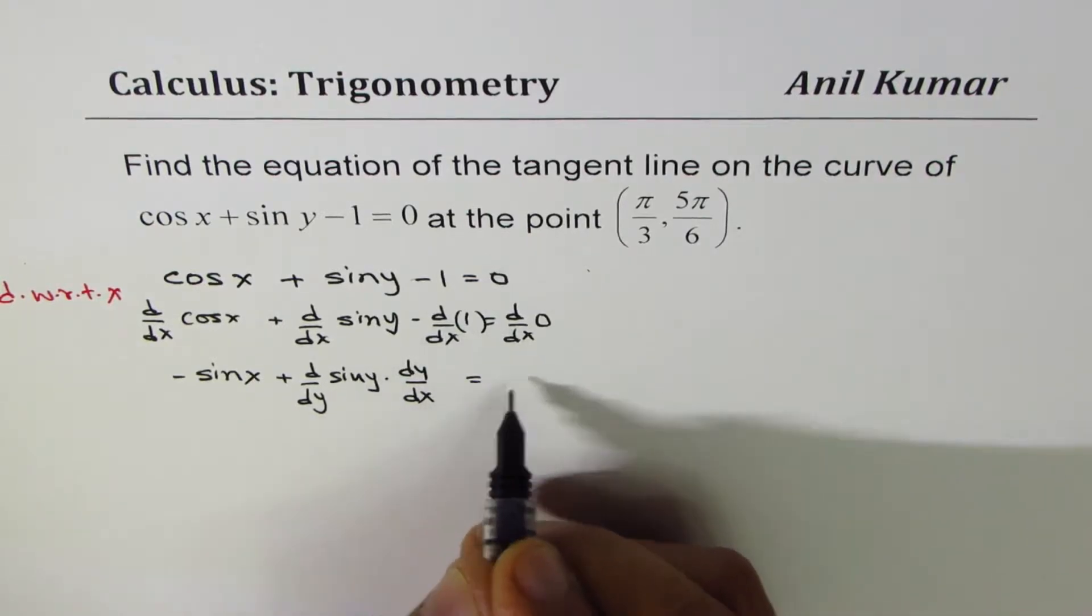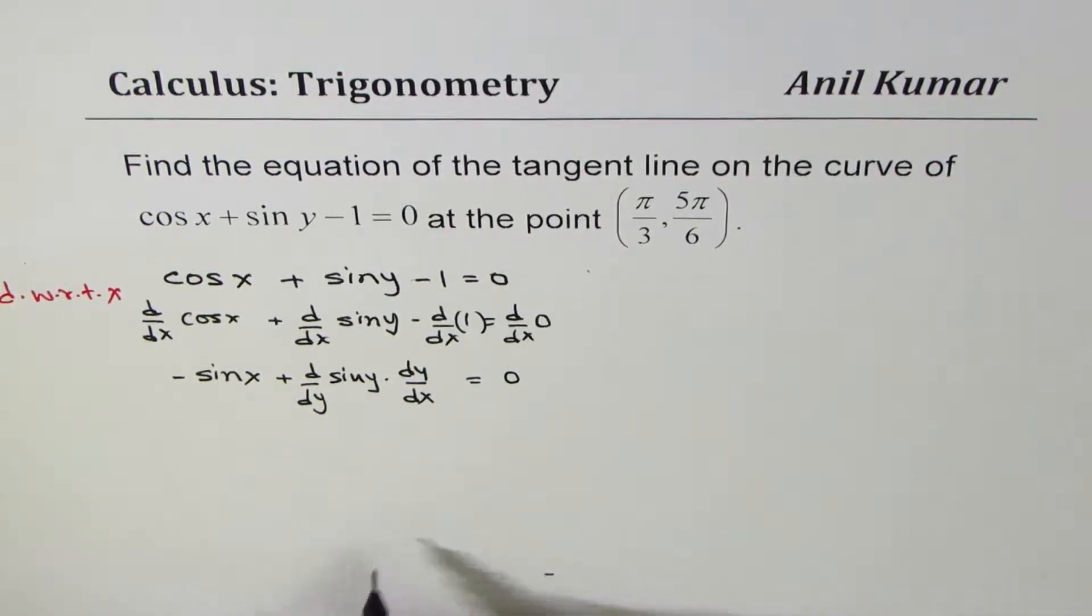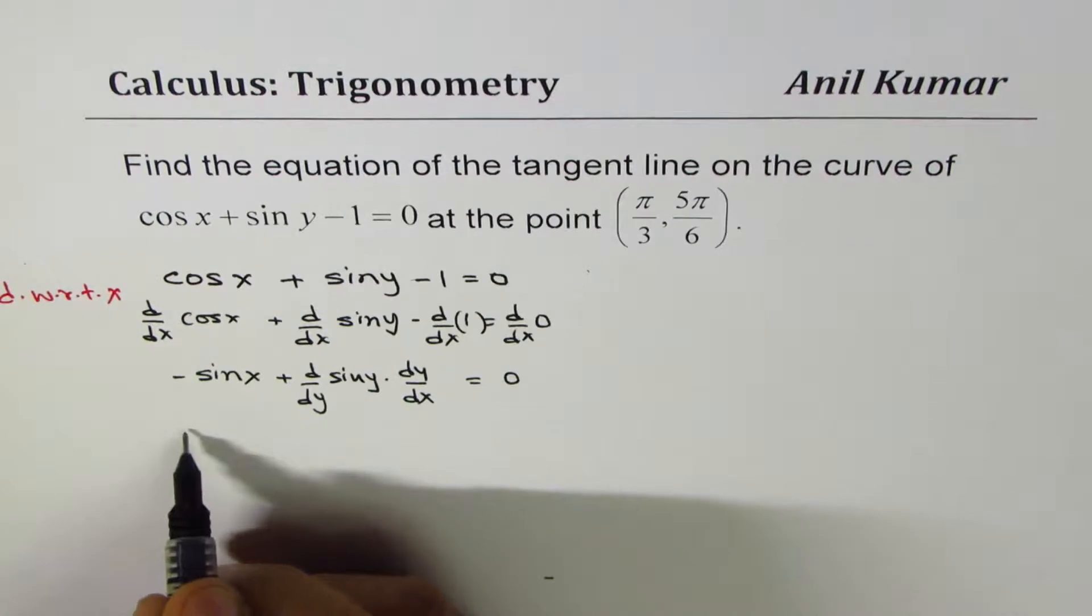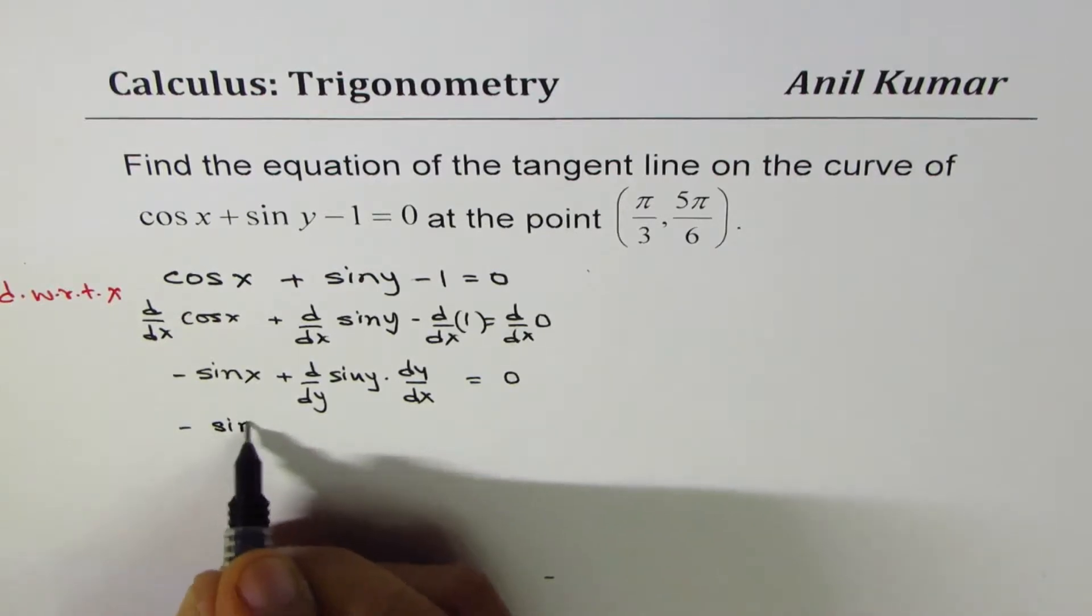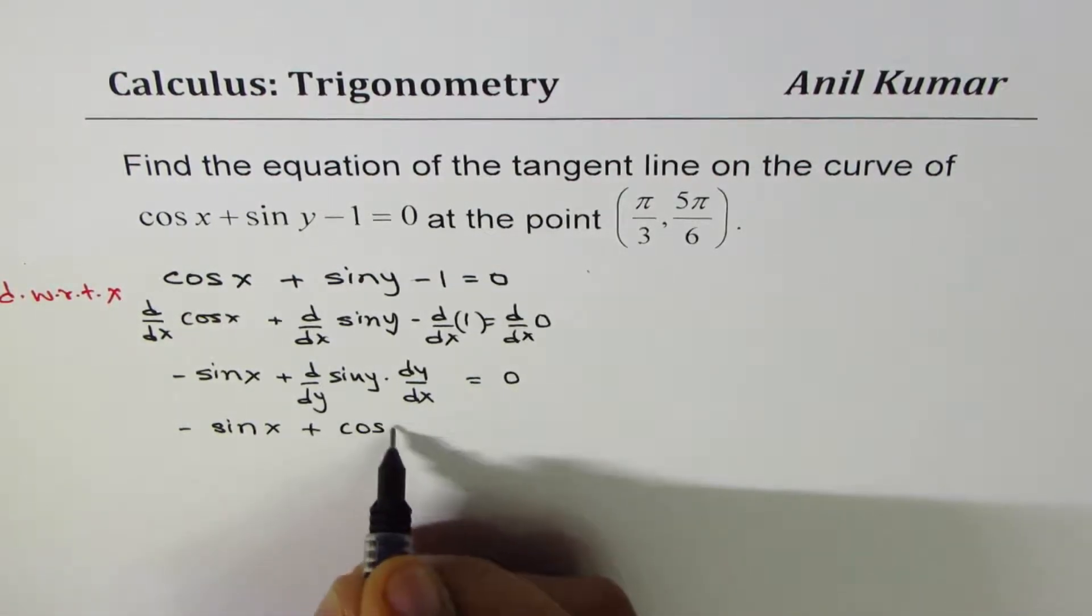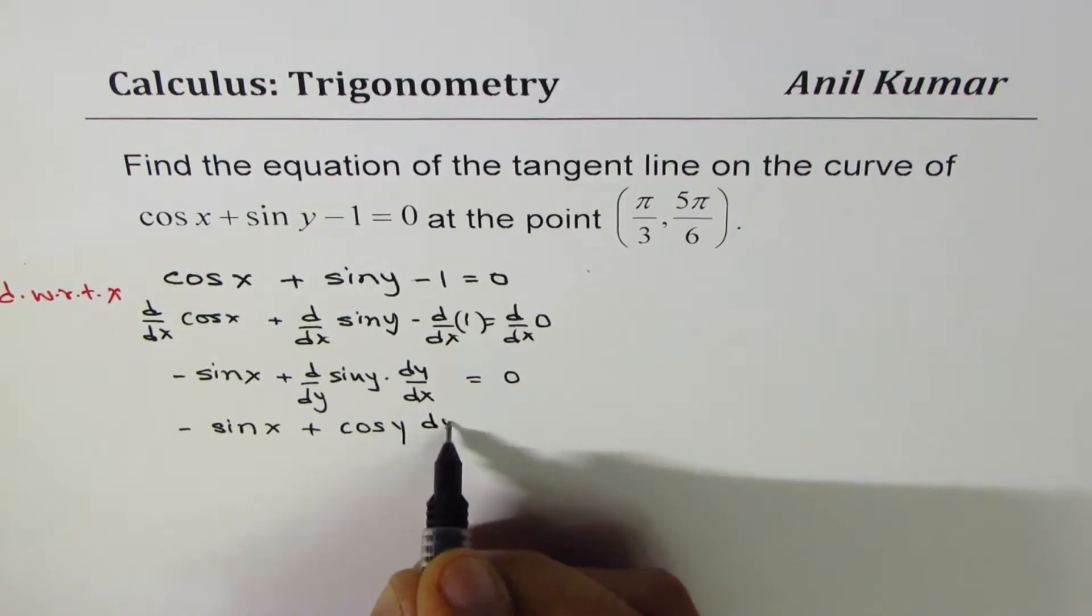The derivative of a constant is 0, so we get this equal to 0. Now, the derivative of sin y with respect to y will be cos y, so we get -sin x + cos y dy/dx = 0.